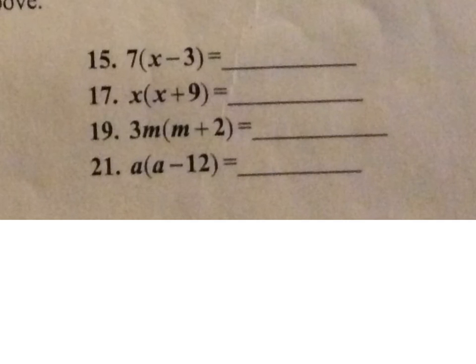And over here, 15, 17, 19, 21. 7 times x is 7x. 7 times minus 3 is going to be minus 21. x times x is x squared. x times plus 9 is going to be plus 9x.